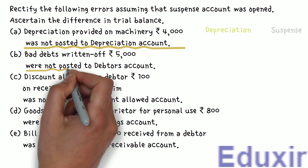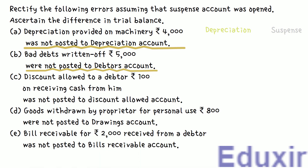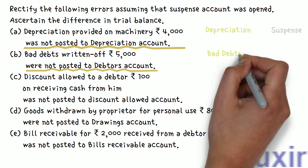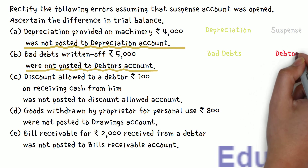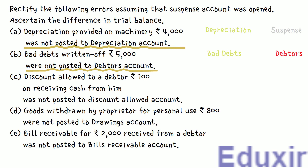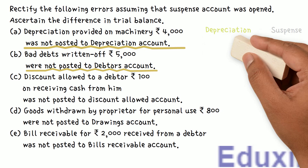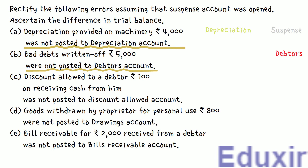Let's now take up the next error. In this case, 5000 rupees of bad debts written off were not posted to Debtors Account. Bad debts are administrative expenses. The business is writing off bad debts, so we debit the Bad Debts Account with 5000 rupees. As bad debts represent amounts not recoverable from debtors, the debtors asset decreases, so we credit the Debtors Account with 5000 rupees. However, there was no entry posted to the Debtors Account — it was properly posted to the Bad Debts Account. To rectify this error, we credit the Debtors Account with 5000 rupees. As this is a one-sided error, the Suspense Account needs to be debited.